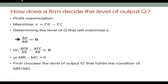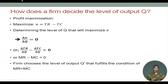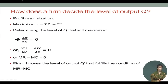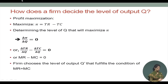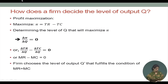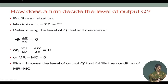Our assumption is that the firm is maximizing profit. Pi is our typical symbol for profit, and pi equals total revenue minus total cost. We want to determine the level of output that will maximize pi. The first order condition for maximization implies ∂π/∂Q = 0, that is ∂TR/∂Q minus ∂TC/∂Q equals 0, or marginal revenue minus marginal cost equals 0. The firm chooses the level of output Q* that fulfills the condition of marginal revenue equals marginal cost.